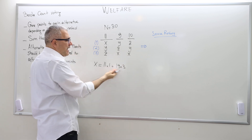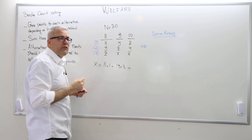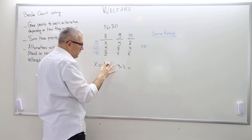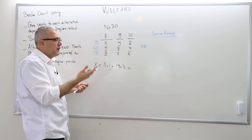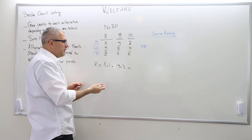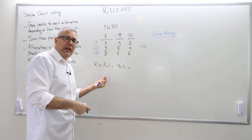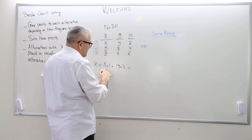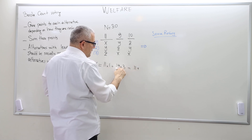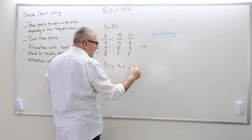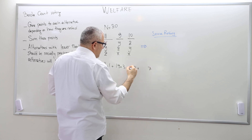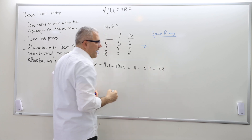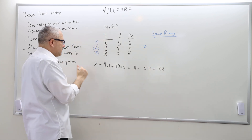And 19 people ranked X as the third alternative, so it receives three points for those 19 people — 19 times three is 57. Sometimes as I talk and do calculations I may make mistakes, but this gives 11 plus 57, which is 68 total points for X.